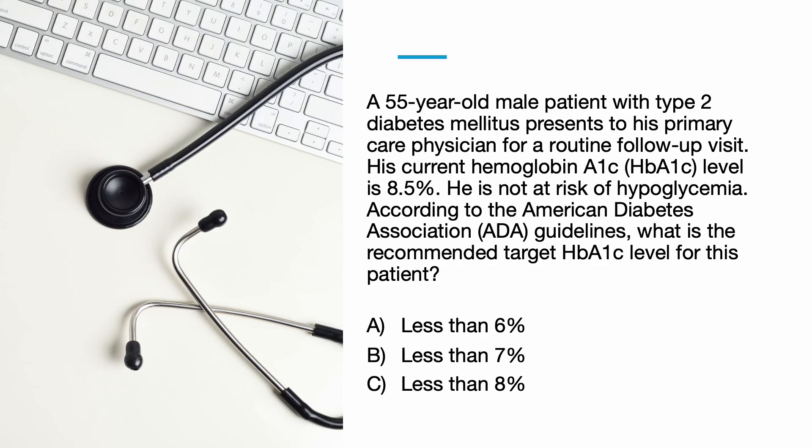Here is a case of a 55-year-old male patient with type 2 diabetes. His current hemoglobin A1c level is 8.5% and he is not at risk of hypoglycemia. According to the American Diabetes Association guidelines, what is the recommended target hemoglobin A1c level for this patient? Less than 6%, less than 7%, or less than 8%?